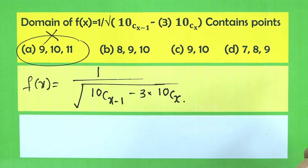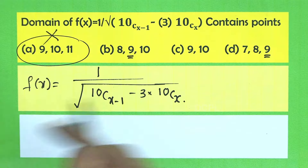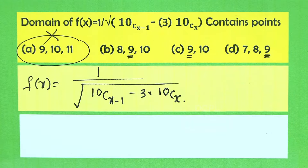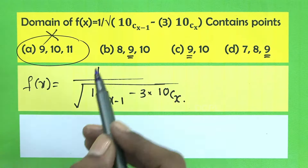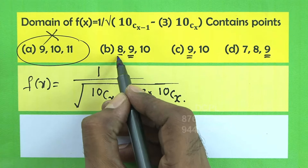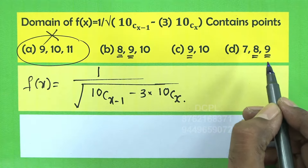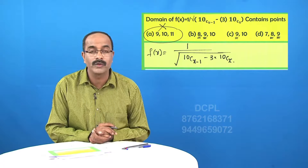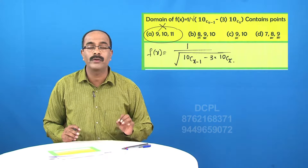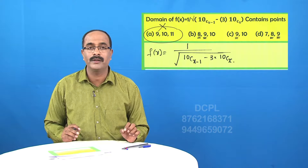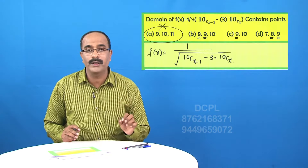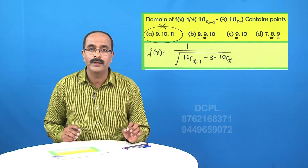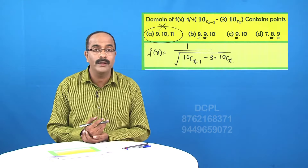Options B, C, and D all contain 9, so 9 should be in the domain. Now both B and D contain 8, while C does not. We will test x = 8: if x = 8 is in the domain, then B or D is correct; otherwise option C is correct. Substituting x = 8 gives 10C7 - 3 · 10C8, which must be greater than 0.